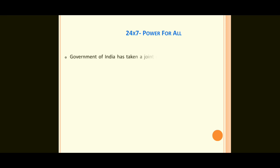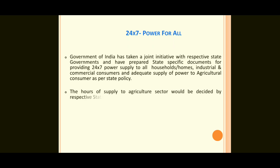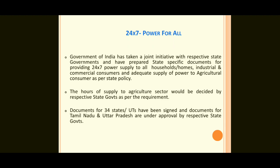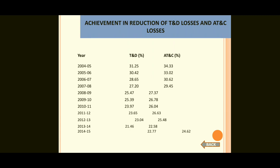24x7 Power for All: The Central Government has taken an initiative with state governments to provide 24x7 power supply to all households, industrial and commercial consumers. The agriculture sector hours of supply are decided by respective state governments. Documents have been signed for 34 states.